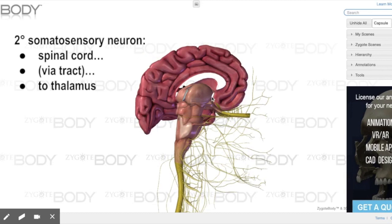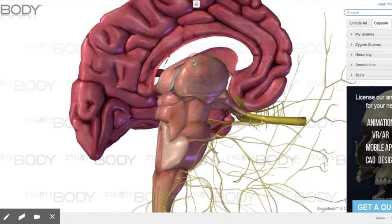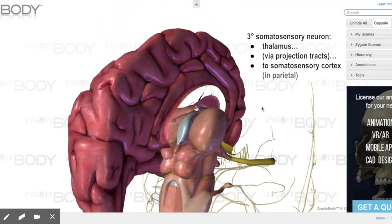Now note, since the signaling started in the left hand and we crossed over, this is now the thalamus of the right side of the brain. In general, the thalamus is a relay center. So all sensory signals coming up to the thalamus will get relayed from here up to specific locations of the cerebral cortex on this side.